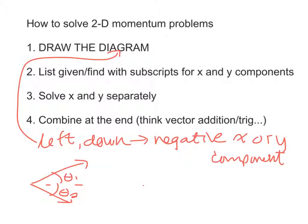I'll do two examples, and you have those in your packet — it says 2D momentum examples. The main things to worry about: if the object is moving to the left or down, you're going to have a negative x or negative y component respectively. Those are things you have to physically put in, and they depend on the diagram.